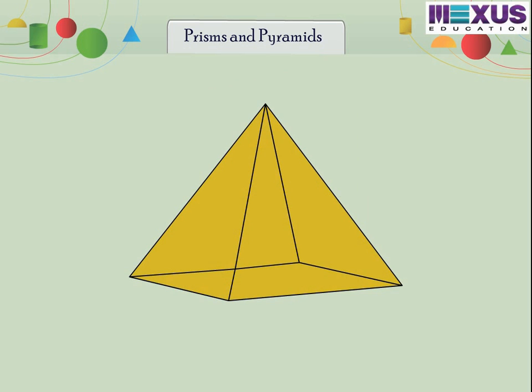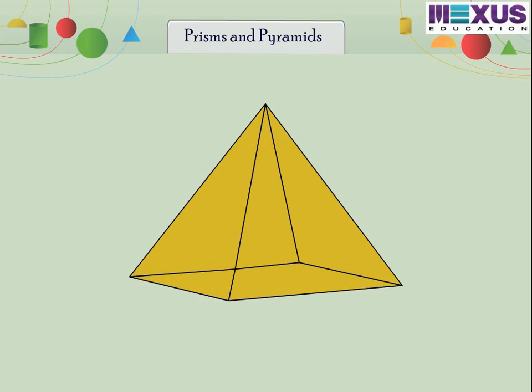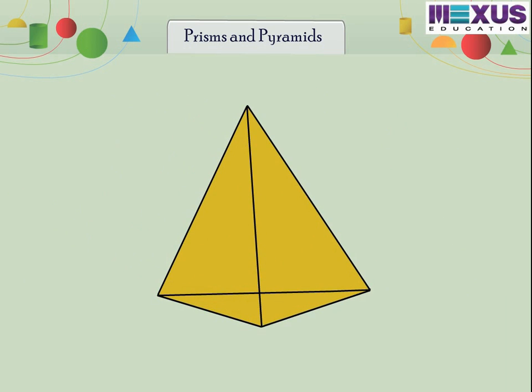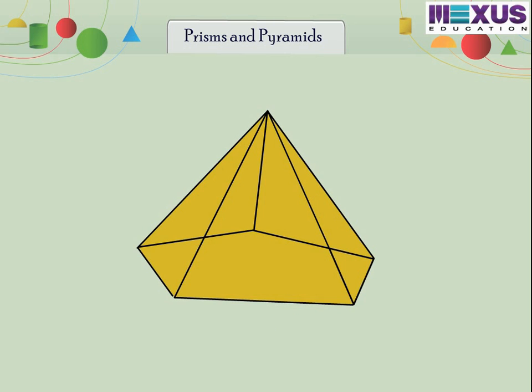On the other hand, a pyramid is a polyhedron for which one face called the base is a polygon and all other faces called lateral faces are triangles. If the base is called the bottom of the pyramid, the top point is called its apex. As with prisms, there are many types of pyramids often classified by the shapes of their bases. For example, a triangular pyramid will have triangular bases while a square pyramid will have square bases. A pentagonal pyramid will have pentagon bases and so on.